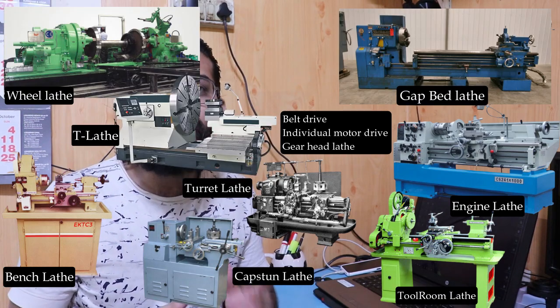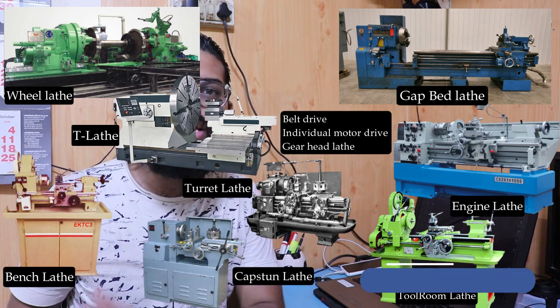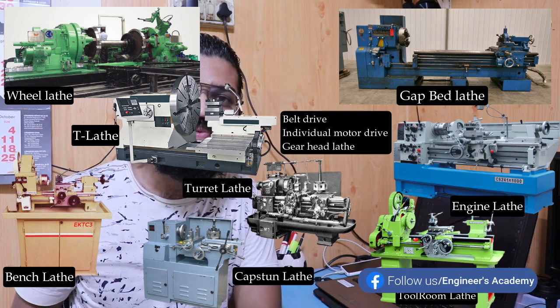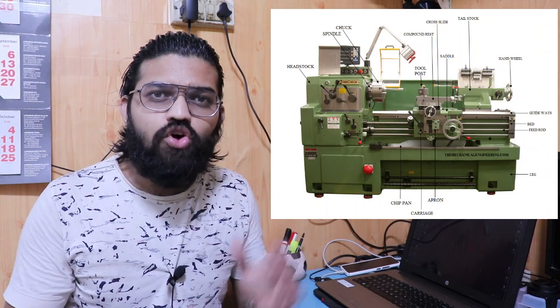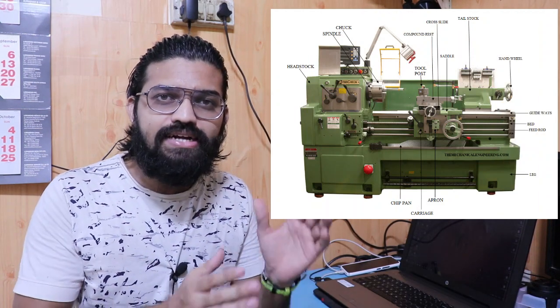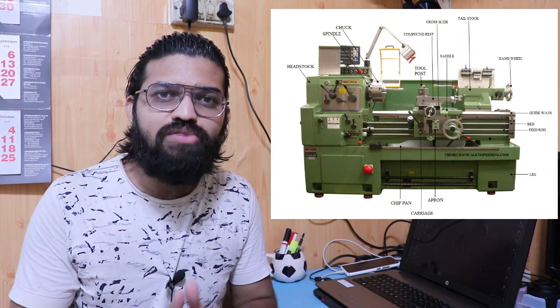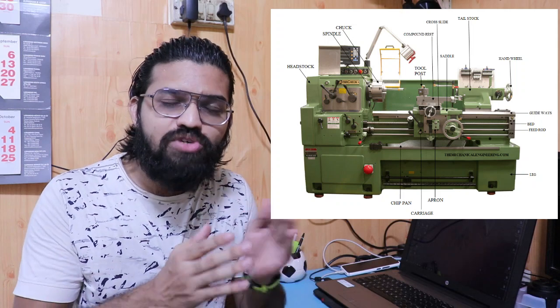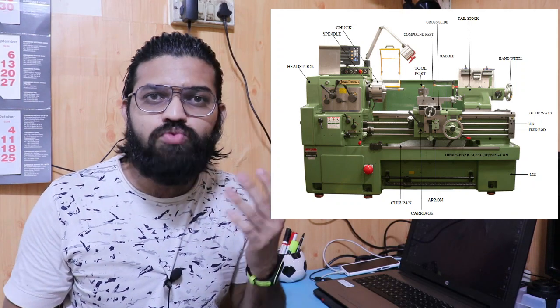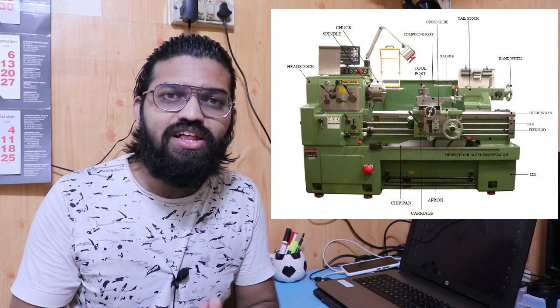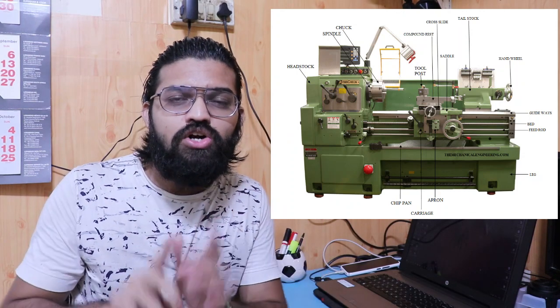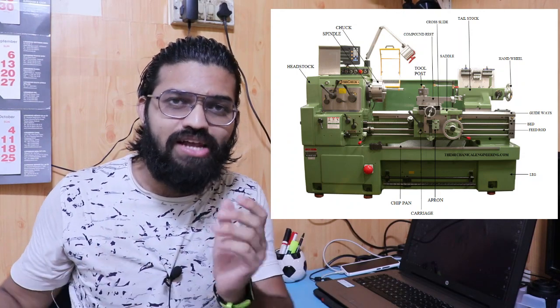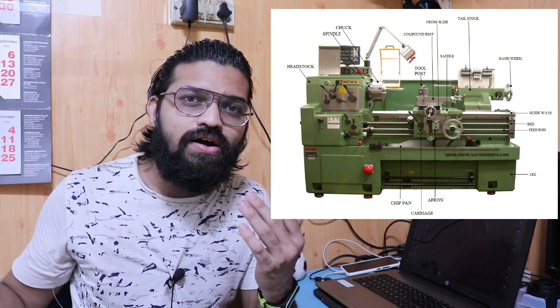There are also special-purpose lathe machines such as the wheel lathe, gap-bed lathe, and T-lathe. In today's video we are going to focus on the heavy-duty production lathe. You can spot this type of lathe machine from a small job shop production system to heavy mass production systems.